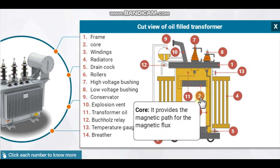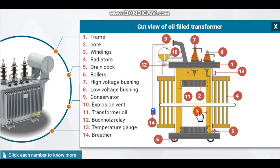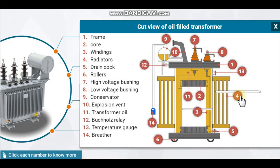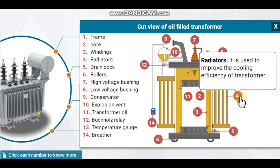Core: it provides the magnetic path for the magnetic flux. Windings: these provide the path for electric current. Radiators: these are used to improve the cooling efficiency of the transformer.